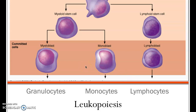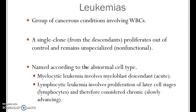Let's discuss leukemia. Leukemia is a cancer of the blood. It involves the white blood cells and is unique because it's basically a liquid tumor. Most tumors are solid — a solid mass — and if you catch it early enough, you can cut it out before it metastasizes to other tissues.